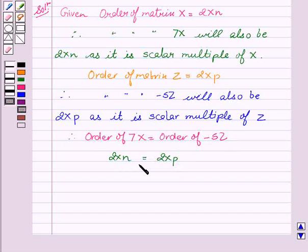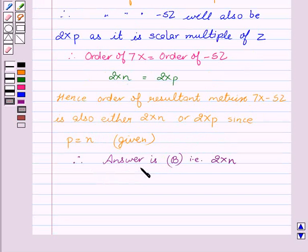Hence, order of resultant matrix, that is 7X minus 5Z, is also either 2 cross n or 2 cross p since p equal to n. This is given to us. Therefore, answer is b, that is 2 cross n be the order of matrix 7X minus 5Z.